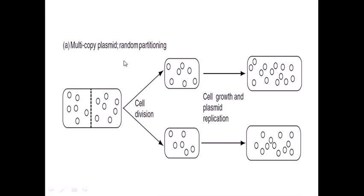In case of those plasmids which are having a higher copy number, they can make this partitioning in a random way to ensure that they are getting all the plasmids.